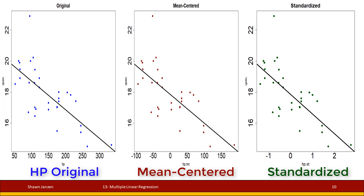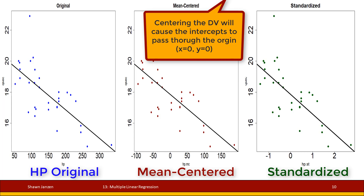That wraps up this crash course introduction to mean centering and standardization. They're very useful techniques that can come in handy when you're in a bind or just want to center everything at the origin. See you next time as we wrap up our last video on polynomials.